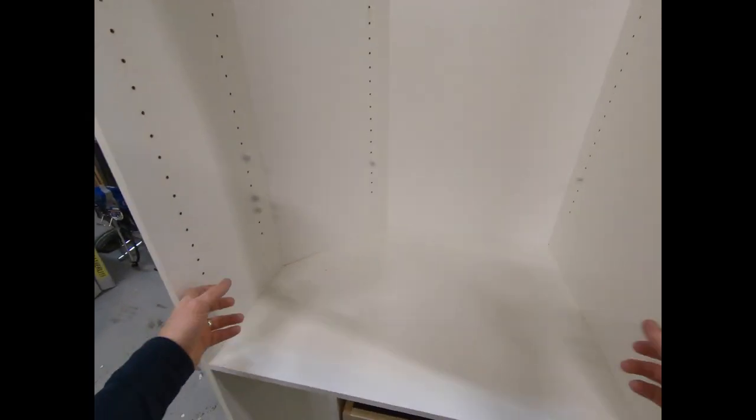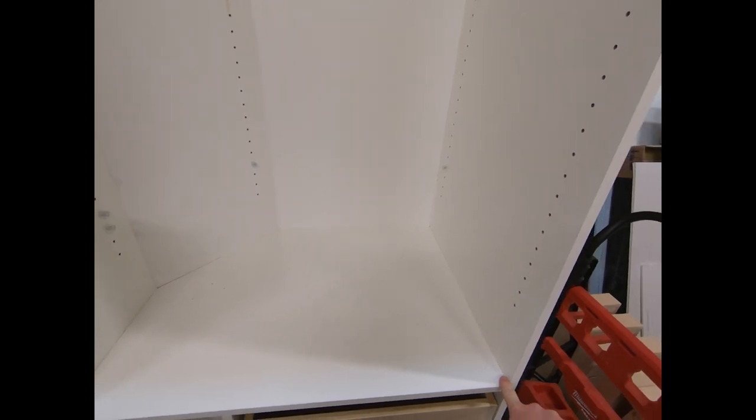Okay, so I need to cut my shelf to go in here. So I know my internal dimension is 30, and my shelf is 29 and 7 eighths. I deduct an eighth of an inch off the interior width.